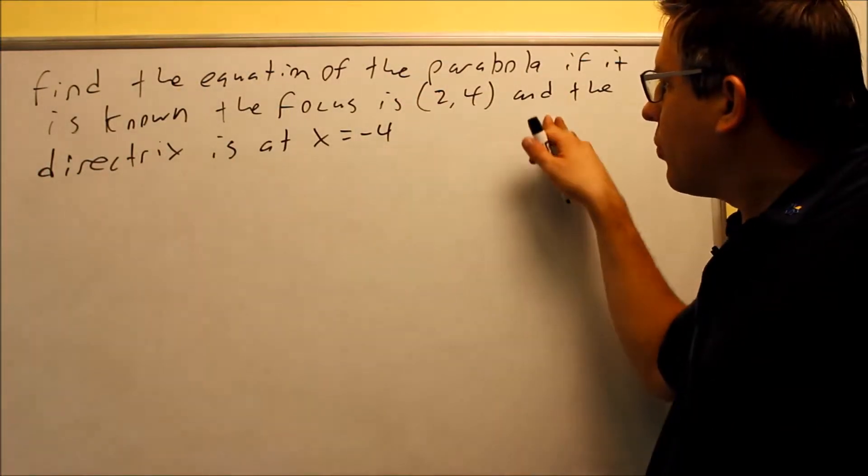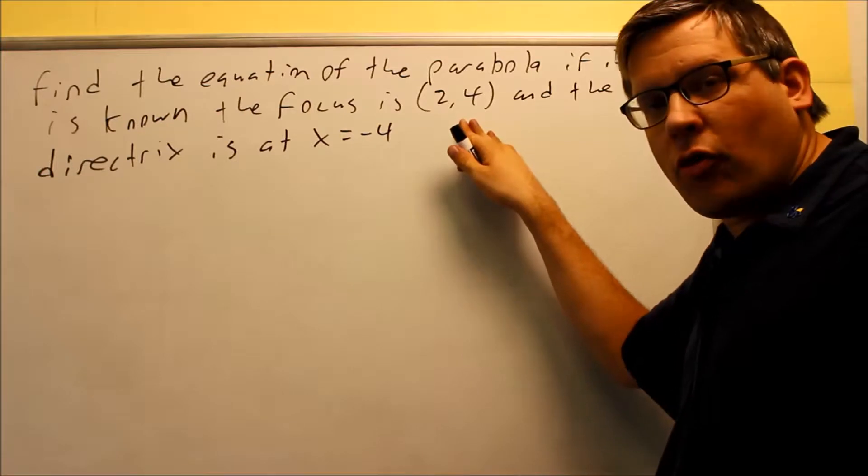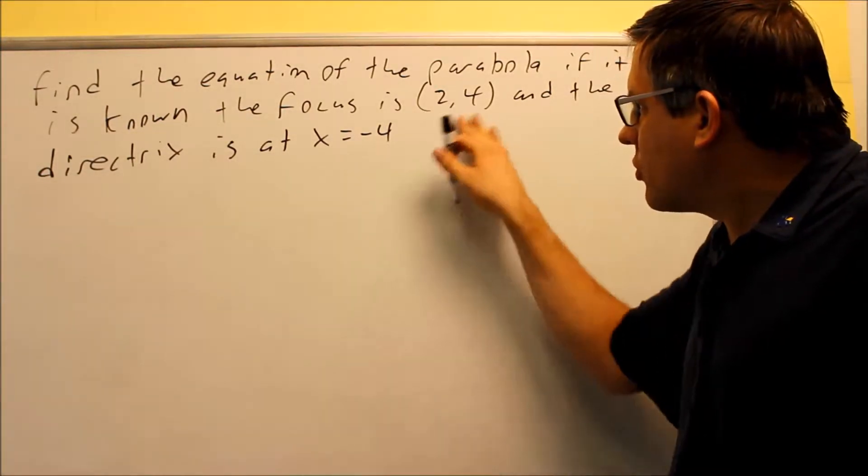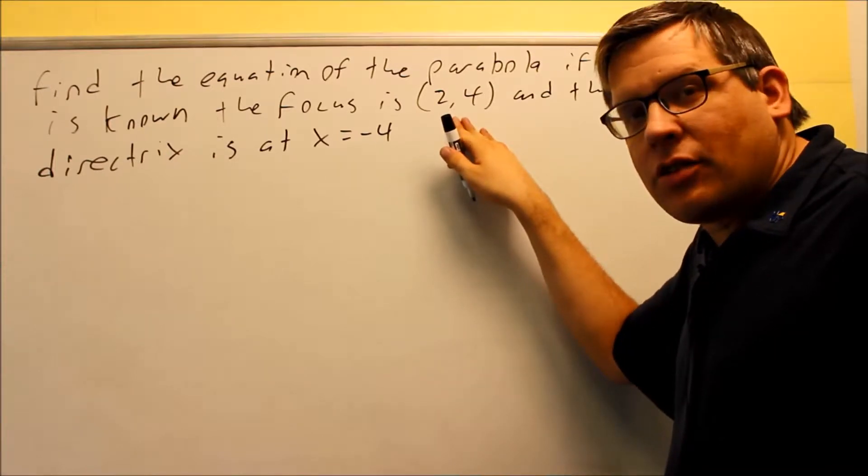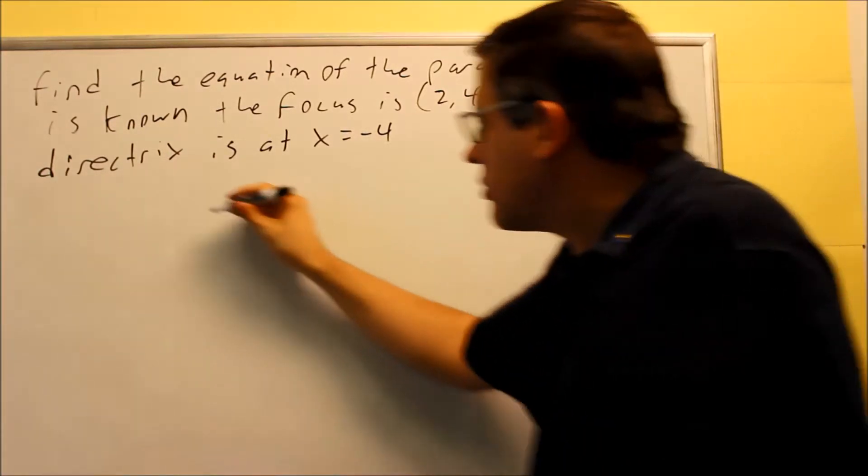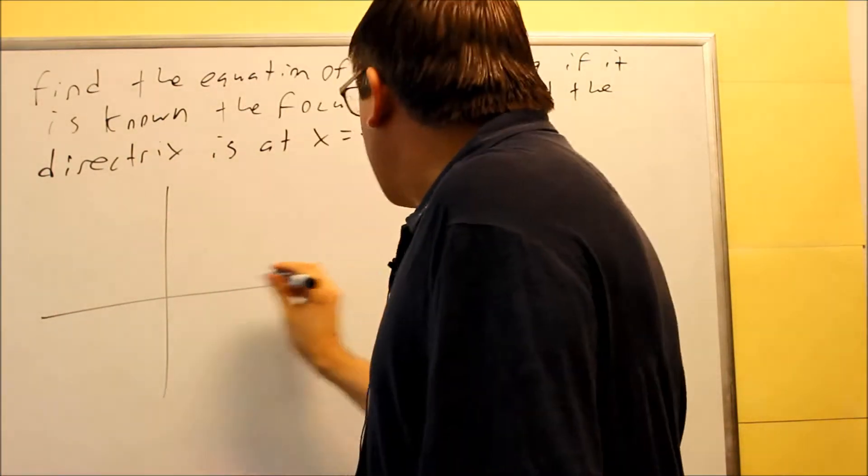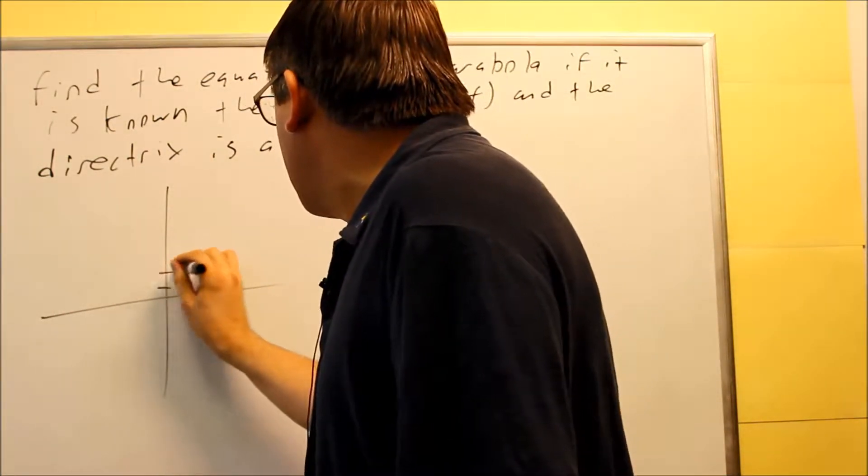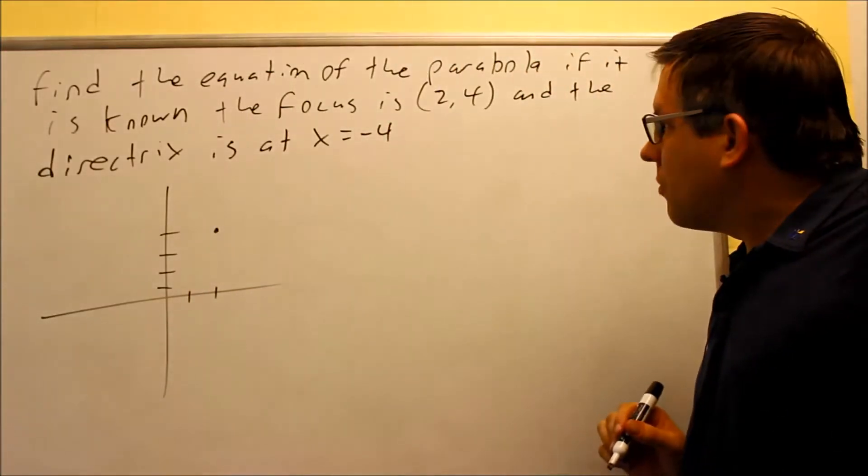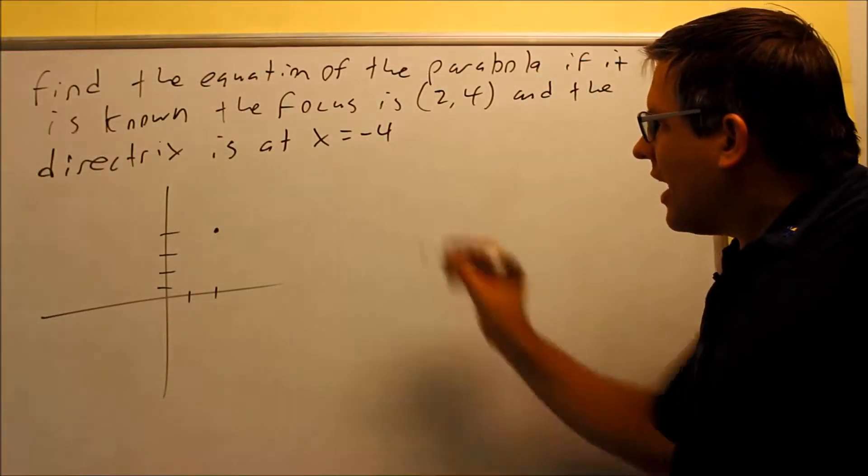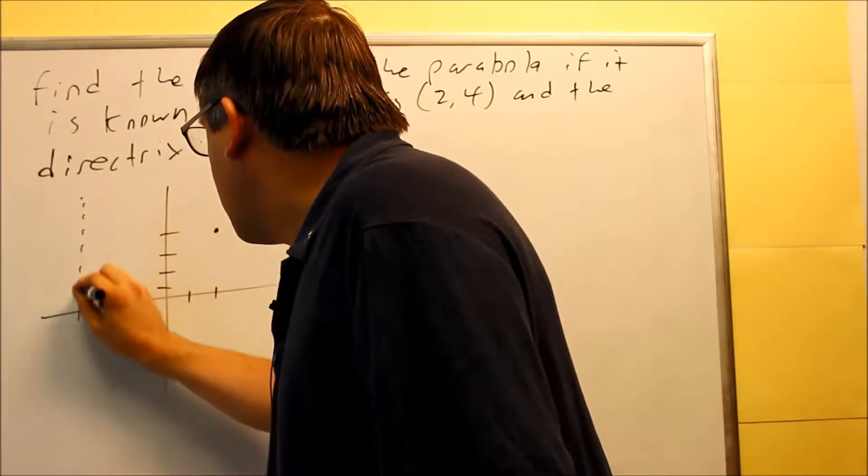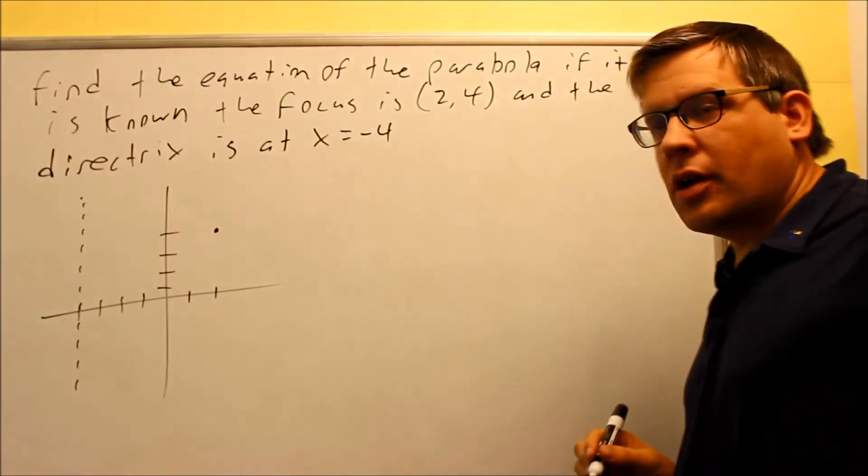Okay, next one, we want to find the equation of the parabola. Focus is 2, 4 and directrix is that X is equal to negative 4. So first thing you want to do is plot this one and also we're going to draw in the directrix. So let's do that first. We have 2, 4 is right here. Okay, so we have 2, 4 and then the directrix is that X is equal to negative 4, that's a vertical line going through here.